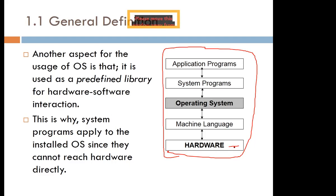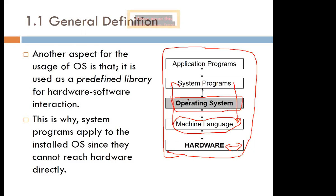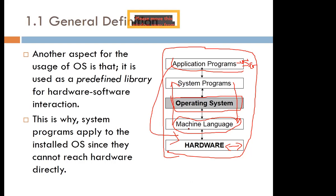Looking at the diagram, at the lowest level we have the hardware — the physical components. Then we have machine language, understood by the machine. From there, the operating system links between system programs and machine language, converting between them. Then we have application programs which users work with. The user uses application programs and doesn't have to know what is happening behind the scenes — they just write and execute their program; the rest is done by the operating system.